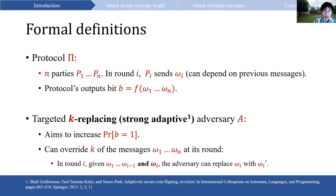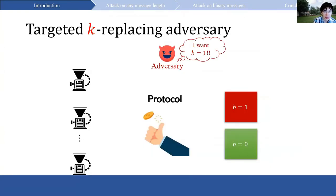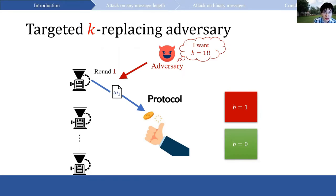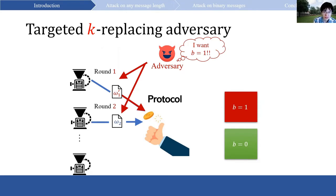The adversary has a budget k, which is the total number of replacements allowed. As an illustration, our k-replacing adversary acts as follows. The adversary wants to bias the output to 1. At round 1, party 1 sends out message omega_1, and the adversary decides whether to replace it — in this case, replacing it with omega_1 prime. At round 2, party 2 sends out message omega_2, which could depend on omega_1, and the adversary chooses not to make a replacement.